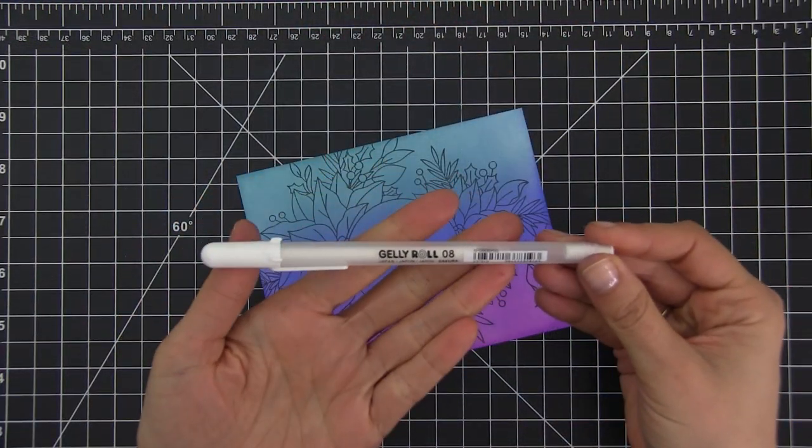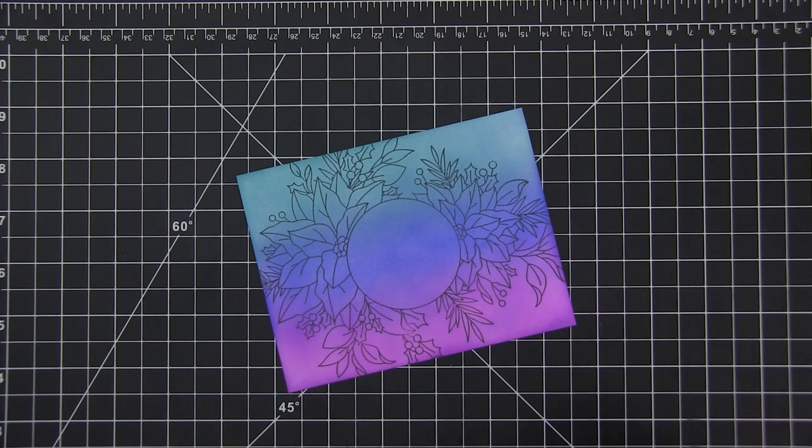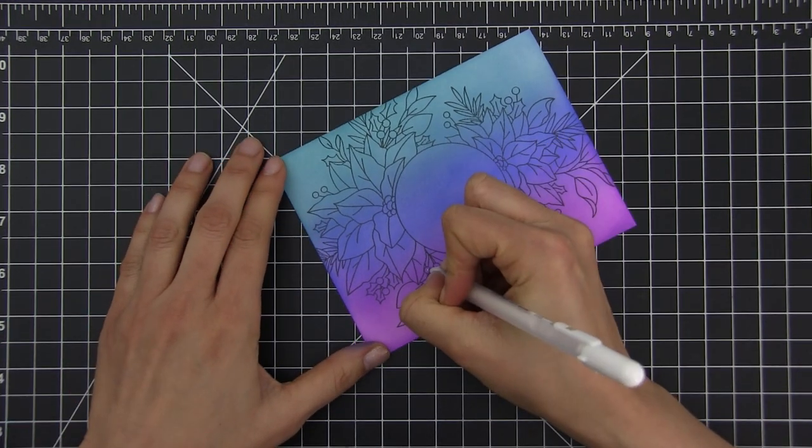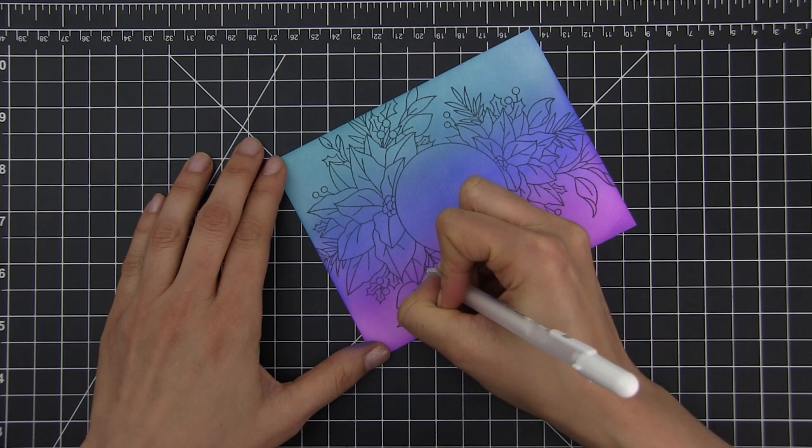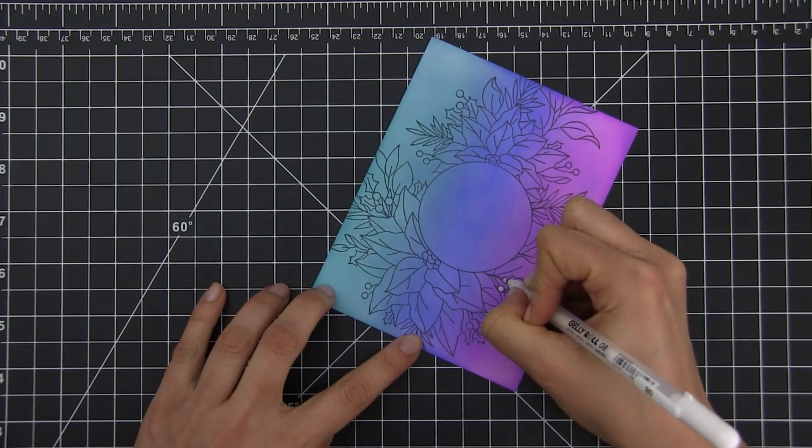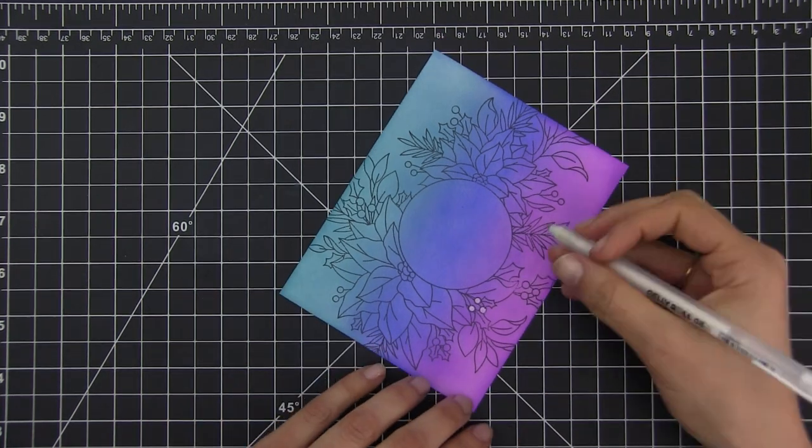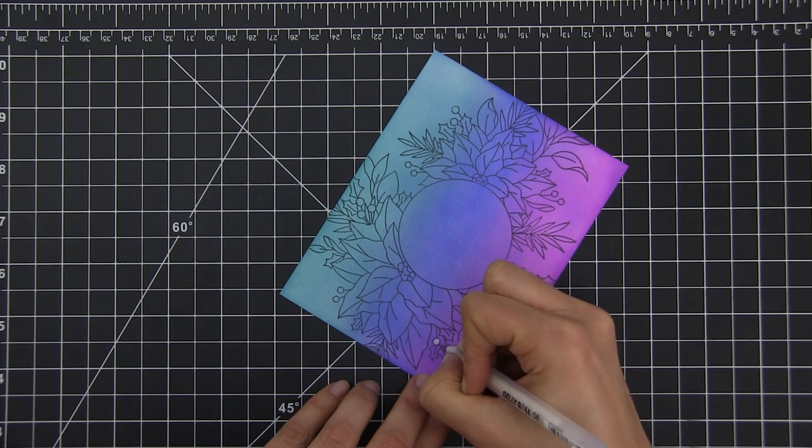In my case, I'm highlighting a few leaves, but you could choose, for example, to highlight the flowers, one flower, two flowers—this is up to you. I think this technique is really, really cool. It looks like you masked all those little flowers with leaves when you're actually just coloring over it.